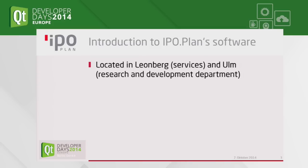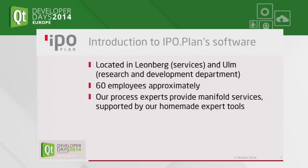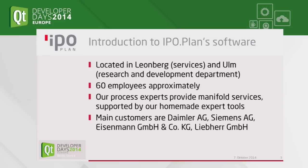We have two locations. The headquarter is in Leonberg, near Stuttgart — that's where services are located. In Ulm, between Stuttgart and Munich, is our research and development department. We have approximately 60 employees, about 10 developers, and others in Leonberg — software developers, engineers, and a wide range of people. Our main customers are Daimler, Siemens, Eismann, and Liebherr. Most customers are in the automotive sector.